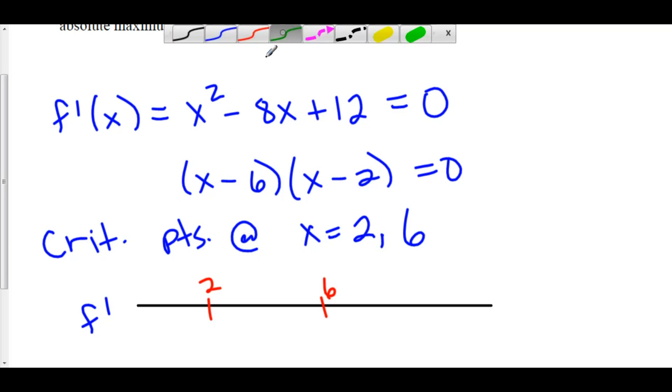Let's look to the left of 2, how about 0? Negative times negative is a positive. Let's look in between, how about 3? Negative times a positive is a negative. To the right of 6, how about 7? Positive times a positive, that's a positive.